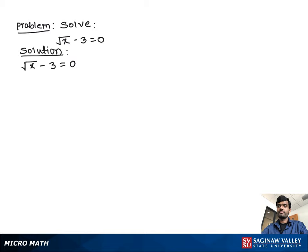To solve this problem, first we isolate the radical sign terms from other terms. Then we can write square root x equal to 3, because negative 3 goes to the other side as positive 3.